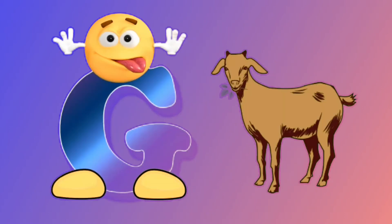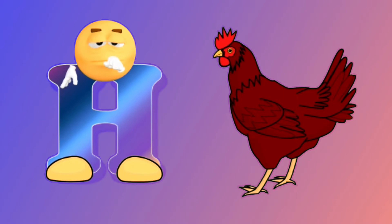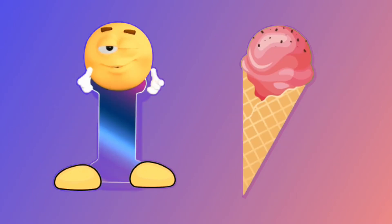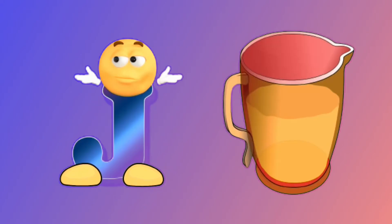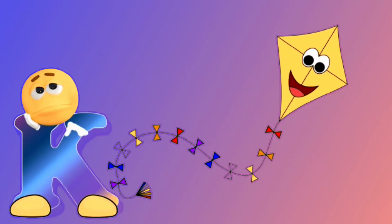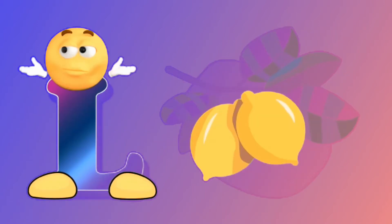G for goat, H for hen, I for ice cream, J for jug, K for kite, L for lemon.